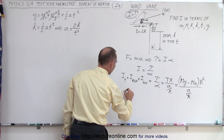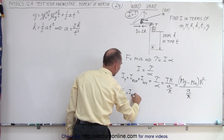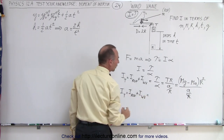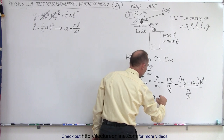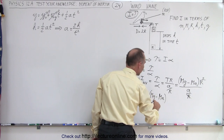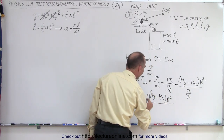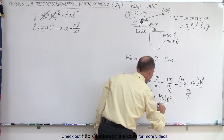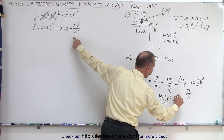That acceleration can be substituted in. So I_total, which is I_rod plus I_wind_vane, is now equal to the quantity Mg minus MA — where a equals 2h over t squared — times r squared, all divided by a (which is 2h over t squared). That means t squared can go to the numerator.